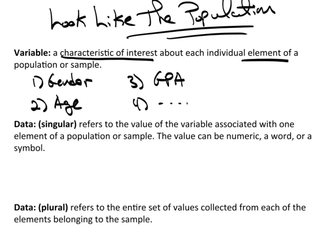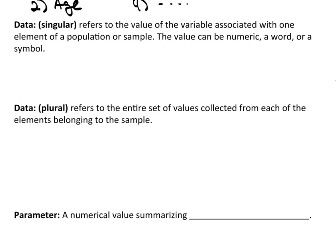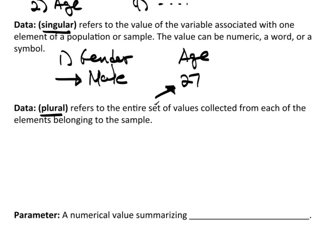Now, we will use the word data a lot, obviously, because this is a class in data analysis. And data actually has two forms, the singular and the plural form. And the singular form, it refers to the value of the variable associated with one element of the population or sample. The value could be numeric. It could be a word. Or it could be a symbol. So, a single data value, maybe it's this first variable up here I said was gender. So, the first person comes along and let's say it's a male. Oops, male. Okay, that male, it's a word. And it's a single data value. Maybe we're also going to record their age. Maybe the person is 27. That is also a single data value.